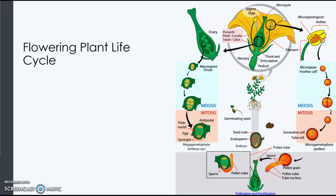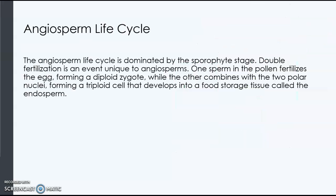The embryo sac and the pollen grain are the gametophytes of the plant. So flowering plants have a very reduced gametophyte structure, and the largest portion of the plant by far is the sporophyte. Part of the life cycle of the plant — the part where the sperm fertilizes the egg — is called double fertilization.